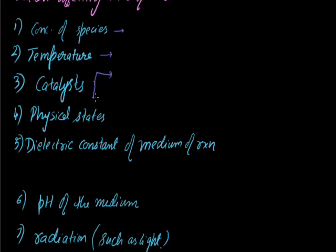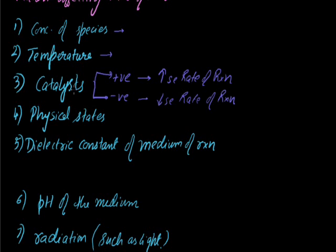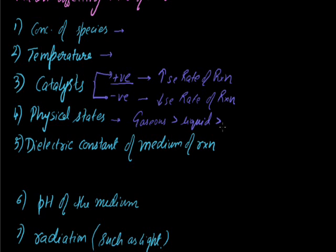Catalyst: there are two types of catalyst — positive catalyst and negative catalyst. Positive catalyst increases the rate of reaction. In general, if it is not mentioned whether the catalyst is positive or negative, then assume it to be positive. Physical state: it is found that the rate of reaction is generally higher in gaseous medium compared to liquid, and yet lower in solid. This is because in gaseous medium the speed of particles is much higher as compared to liquid, and is yet lower in solids, where particles are just vibrating about the mean position.